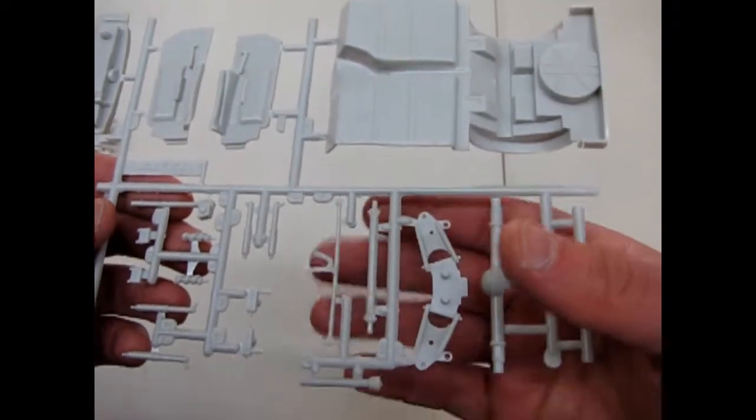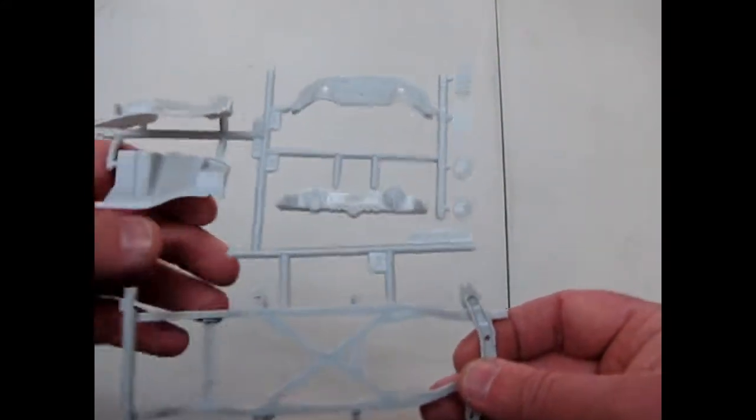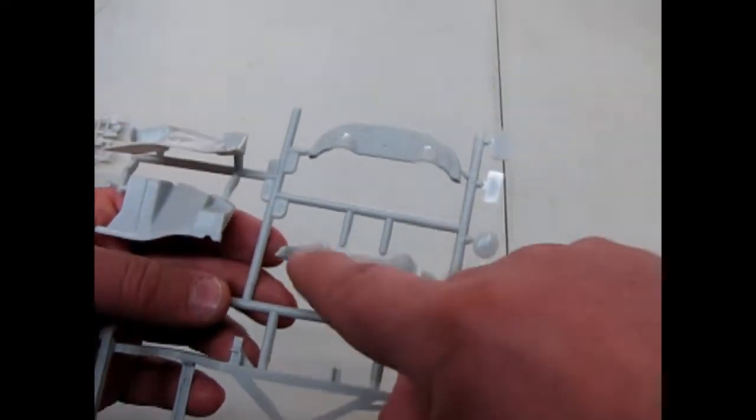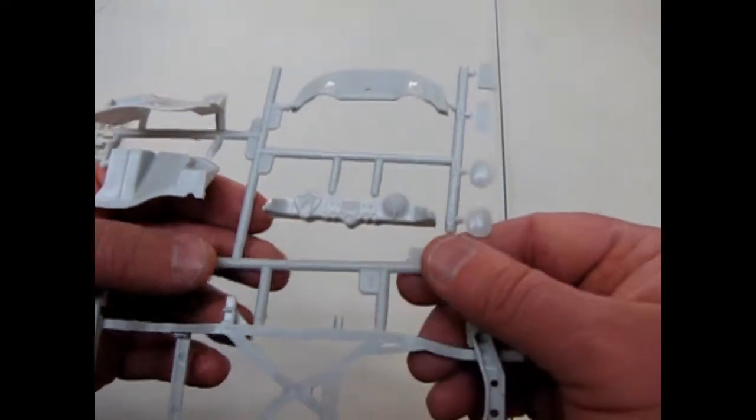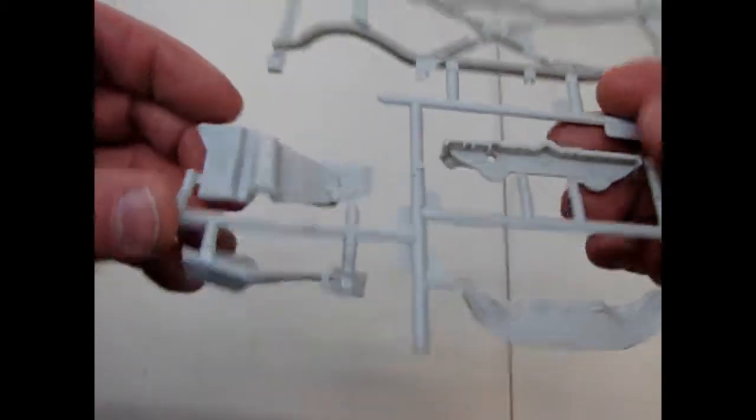And then here we have an independent frame as well as a two-piece dashboard so that you can paint that nice detail there with the instrument panel. There's our splash aprons for under the hood.